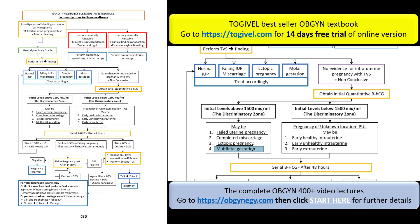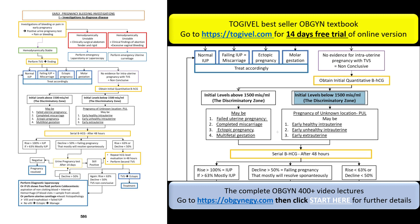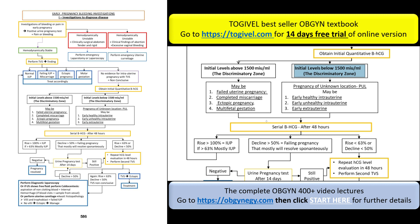The other possibility is that the initial level is below the discriminatory zone, so it is normal not to see anything by TVS. In this condition you have two possibilities: intrauterine pregnancy or extrauterine pregnancy. You know she is pregnant but not where. That is why it is called a pregnancy of unknown location. Even if intrauterine, you do not know if it is healthy or unhealthy.